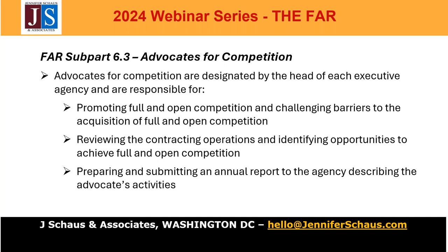Finally, FAR 6.5 — CICA and the FAR require that the head of each executive agency designate an officer or employee to serve as the competition advocate, both for the agency as a whole and for each procuring activity. Agency competition advocates are responsible, among other things, for challenging barriers to and promoting full and open competition in agency procurement activities. This is actually subpart 6.5 — the final section of the presentation.